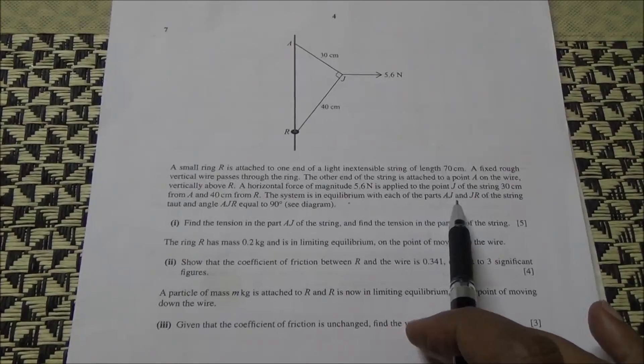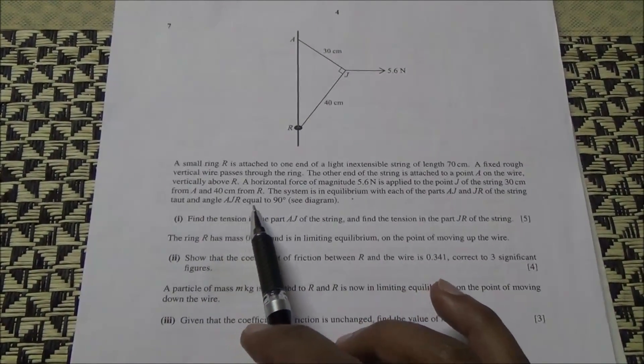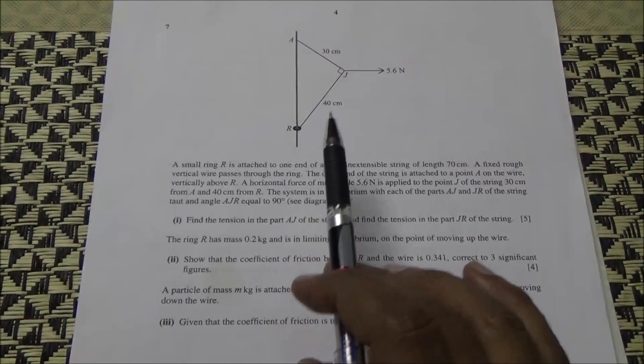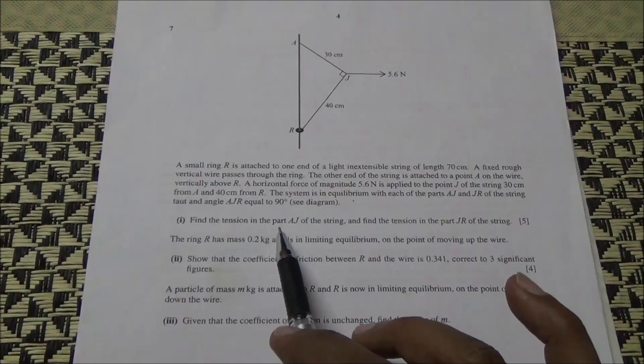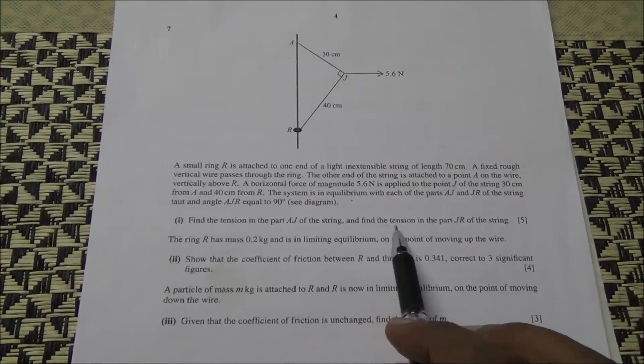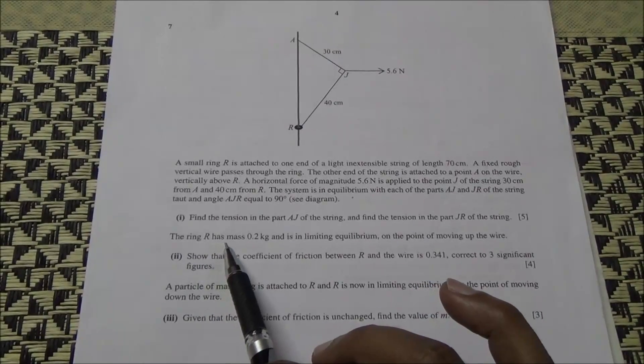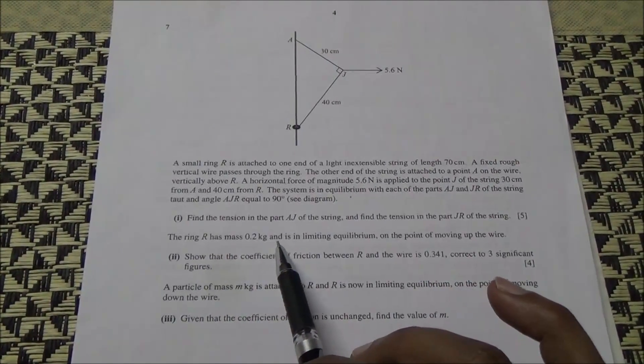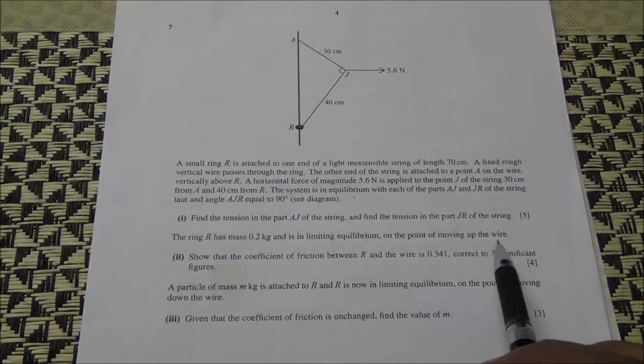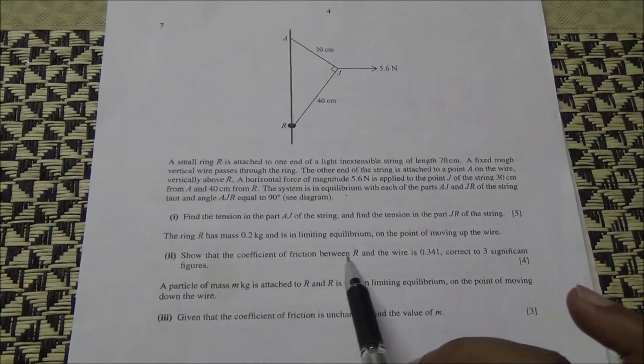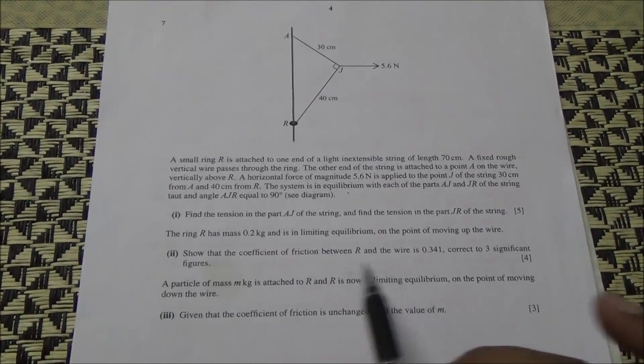With each of the parts A, J, and R of the string, angle AJR is equal to 90 degrees in the diagram. We need to find the tension in part AJ of the string and find the tension in part JR of the string. Also, the ring has a mass of 0.2 kg and is in limiting equilibrium on the point of moving up the wire. Show that the coefficient of friction between R and the wire is 0.341, correct to 3 significant figures.